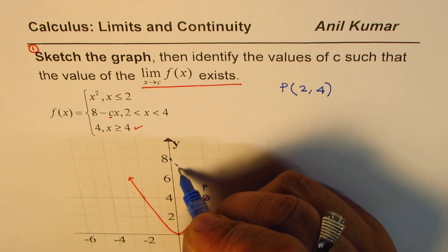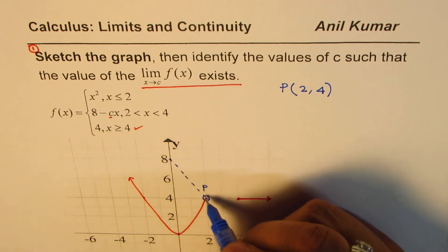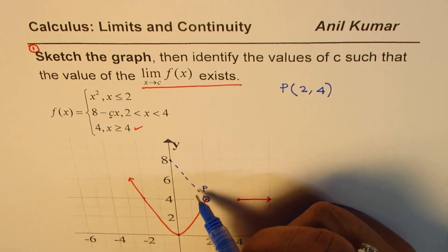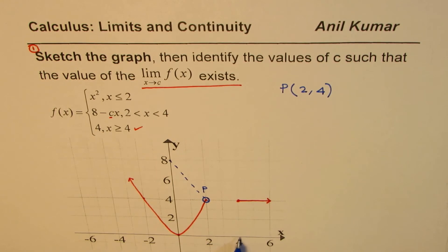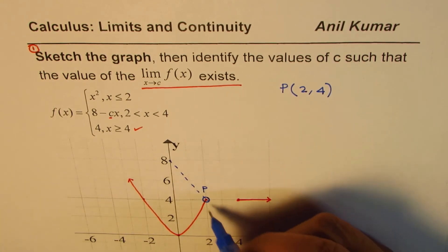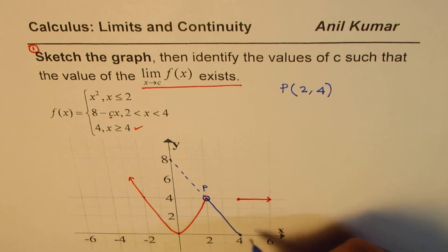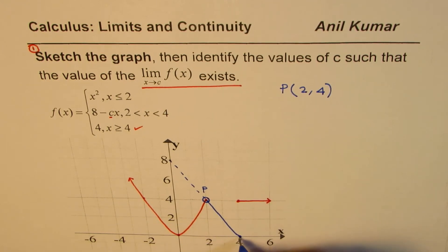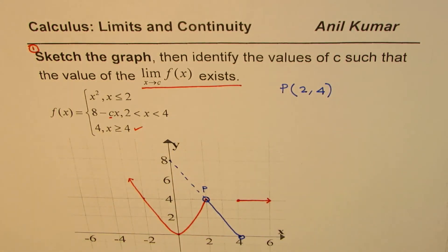Connecting these two points and extending, the portion outside the domain [2, 4] is drawn in dotted lines. Continuing the line, it meets the x-axis at x = 4. The endpoint at x = 4 is open since the domain is strictly less than 4. This completes the sketch of the middle piece, and the graph is now fully sketched.